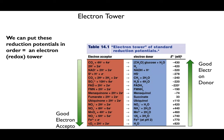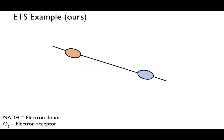The idea is you pair an electron acceptor with an electron donor, look at the difference in E naught values, and calculate how much energy you can get out of a chemical reaction. Let's do a quick simplification of what we call an electron transport system — this is how we get energy using an electron donor and acceptor. In the case of respiration in the presence of oxygen, we start with NADH dehydrogenase (NDH1) and end with cytochrome.